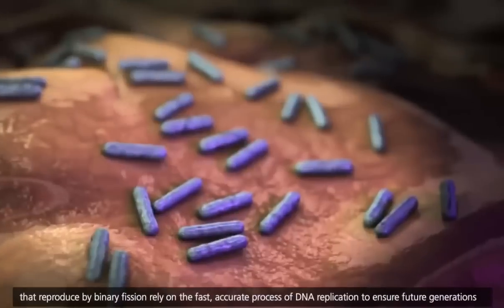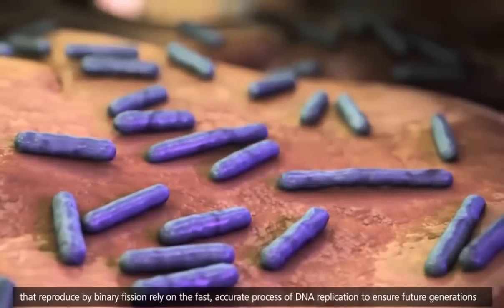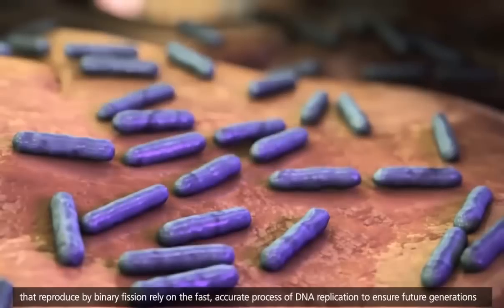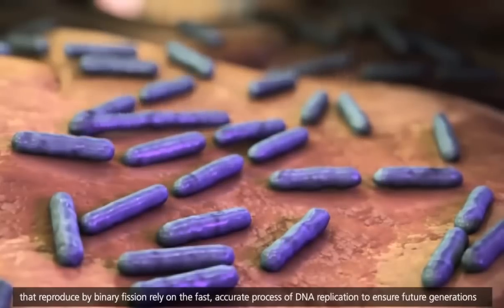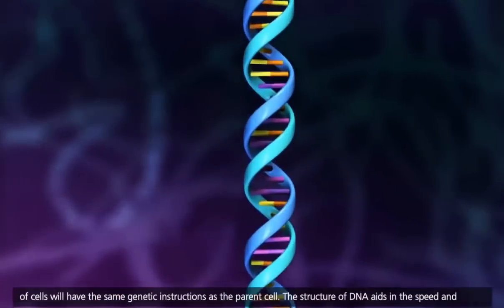Prokaryotic cells that reproduce by binary fission rely on the fast, accurate process of DNA replication to ensure future generations of cells will have the same genetic instructions as the parent cell.